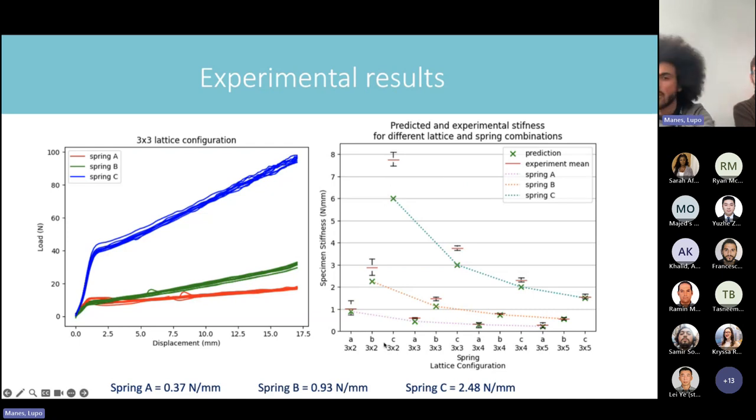The graph on the right shows both the predicted value from our model, the stiffness we expect to see for the lattice configuration and spring configuration, as well as the experimental results. We can see that at first for very small dimensions of lattices, three by two, there is an undershoot from our model of almost 30%. But as we increase the size of the lattice, to three by three, three by four and three by five, the distance between the predicted value and the experimental result goes down. By the time we go to the largest lattice we tested, they are basically overlapping. This is good enough since we plan on using this system with thousands of datoms making lattices that are huge in size.